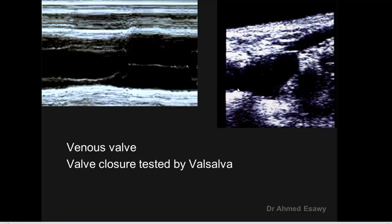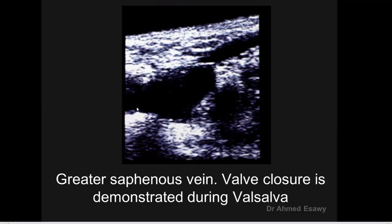Valve closure during Valsalva normally prevents reflux of blood in the opposite direction down the leg. Greater saphenous vein valve closure during Valsalva prevents saphenofemoral junction reflux. This confirms great saphenous vein competency with a healthy, closed valve.